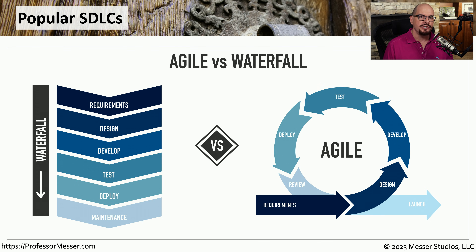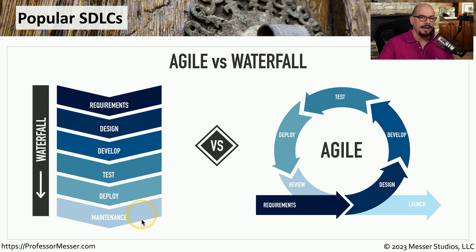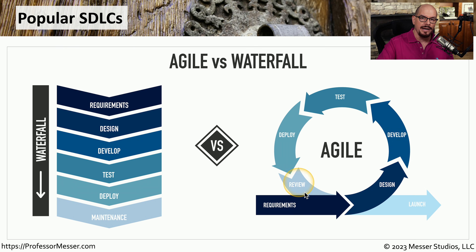Two of the most common application development lifecycles are Agile and Waterfall. The Waterfall lifecycle is a linear cycle that starts with requirements, follows through development, testing, deployment, and finally ongoing maintenance. The Agile lifecycle is designed to be a much faster way to create applications, done by designing, developing, testing, deploying, and reviewing constantly throughout the entire process. Once the Agile process has gone through a number of different cycles to create the application, it can finally be launched.